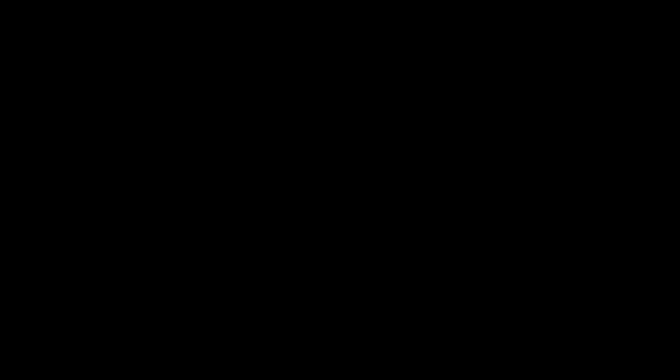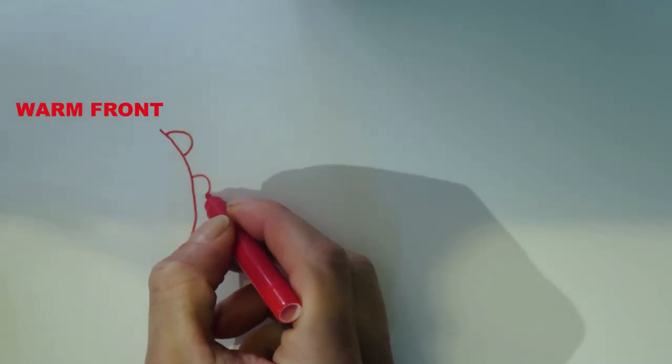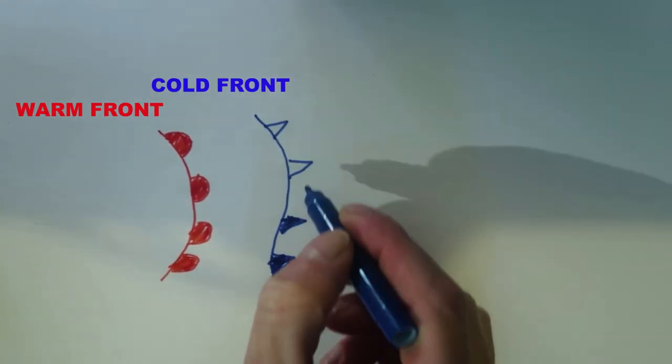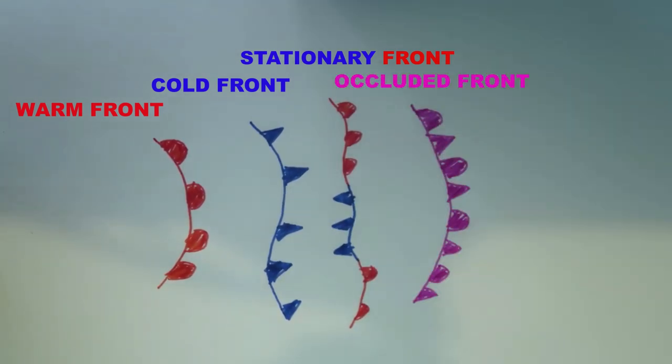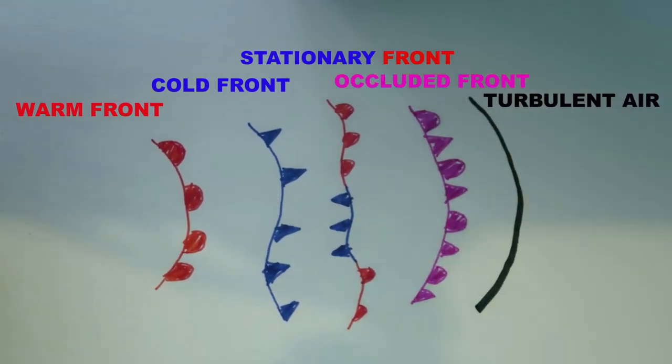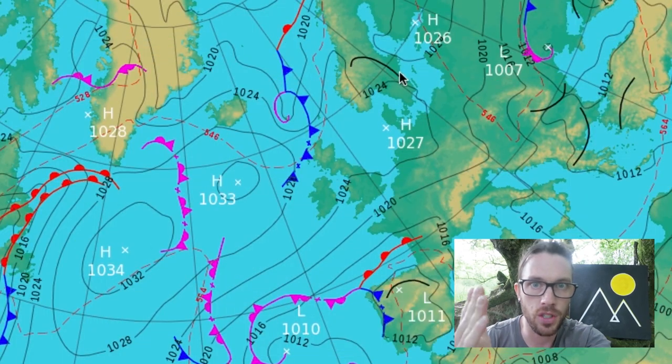Now the weather fronts — the symbols and what they represent. There are four symbols showing what kind of front is coming through, plus an extra one, so actually five. The extra one is just a black line showing turbulent air. With turbulent air a lot of the time comes rain and heavy clouds. On an aeroplane, that's what an updraft of air is — it's what makes the aeroplane wobble.